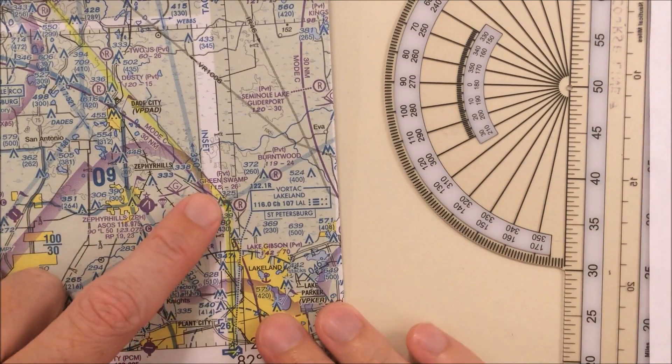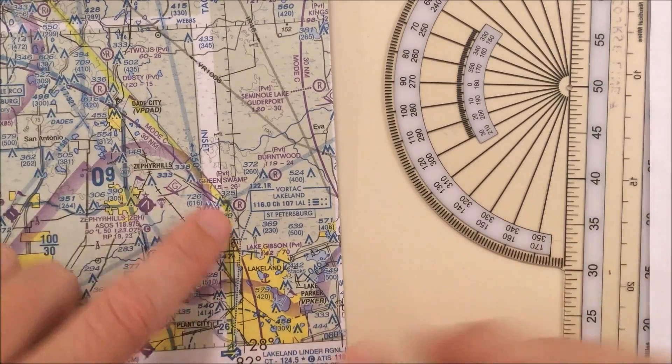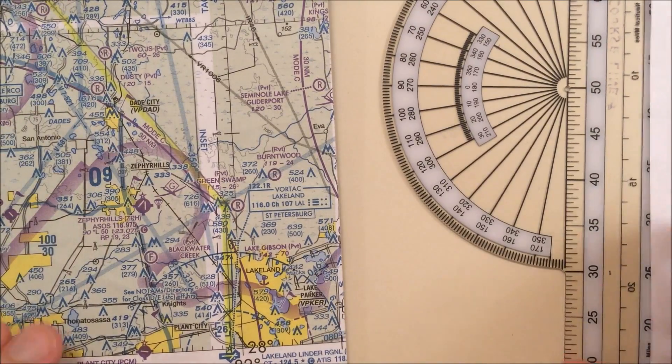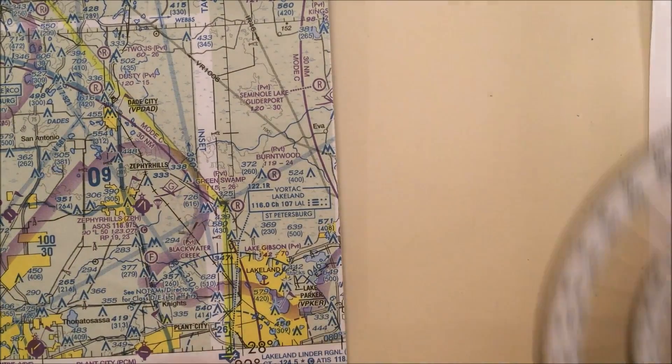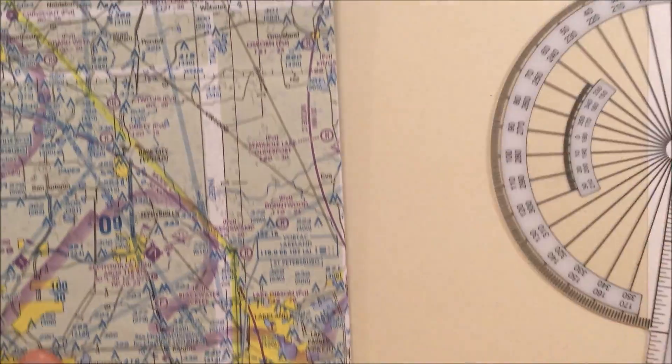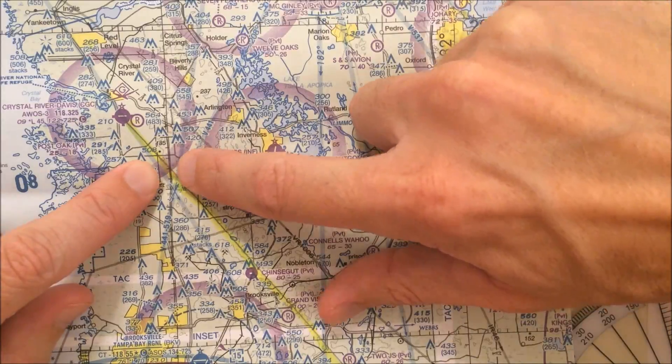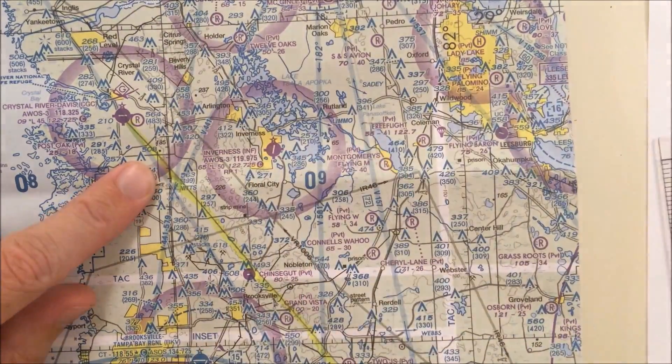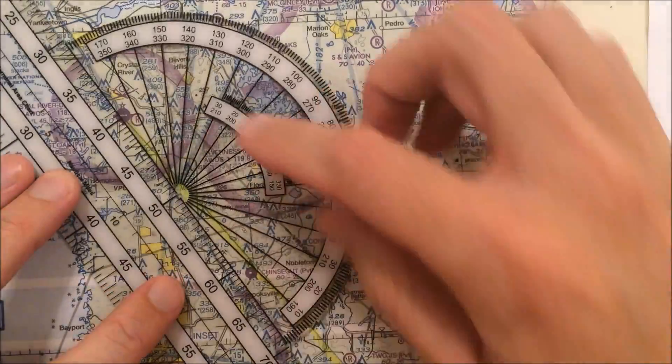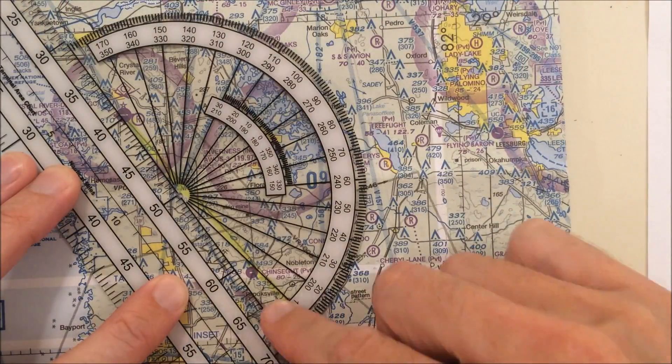Now after I make my turn here, I'm going to have a new true course. So I'm going to have to measure this line. So it's easier to measure using lines of longitude, so I'm going to try to find a good one. And I see a point right up here where my line intersects a line of longitude. So again, I'm going to take my plotter, and I'm going to line it up on this edge right here with my course.